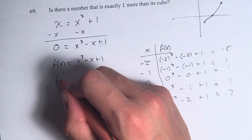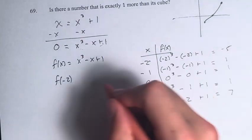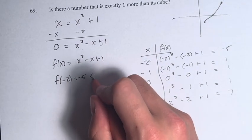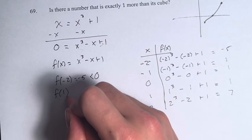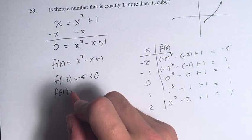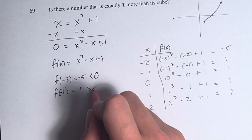And so we can see that f of negative two is equal to negative five. This is less than zero. And f of one, or sorry, f of negative one, also f of one, but let's do f of negative one, is equal to one, which is greater than zero.